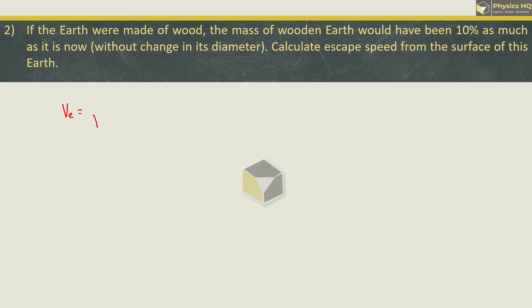Escape velocity is given by the square root of 2GM by R. Now in this new scenario, what has changed is Earth is made of wood and the mass of the wooden Earth is only 10% of the original mass. Or you can say mass of the wooden Earth is 0.1 times the original mass.